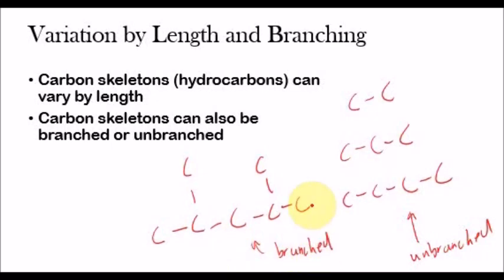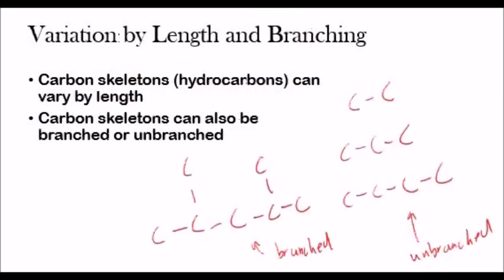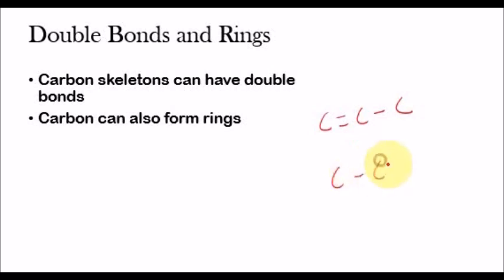The third way a carbon skeleton can vary is that carbon skeletons can have double bonds. Everything drawn so far has single bonds, but carbon can also double bond. So, you can have a carbon skeleton with a double bond here instead of a single bond, and that's going to change the molecule's properties. You could also have multiple double bonds. Instead of having all single bonds, you can start adding double bonds, and carbon skeletons can vary in that sense.